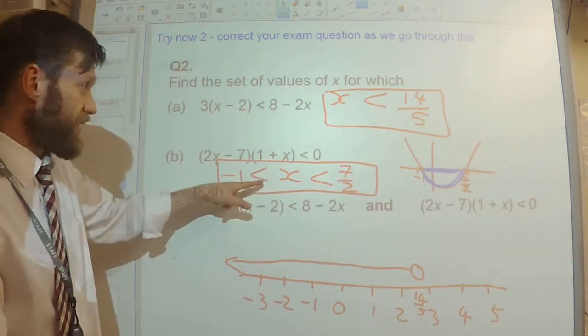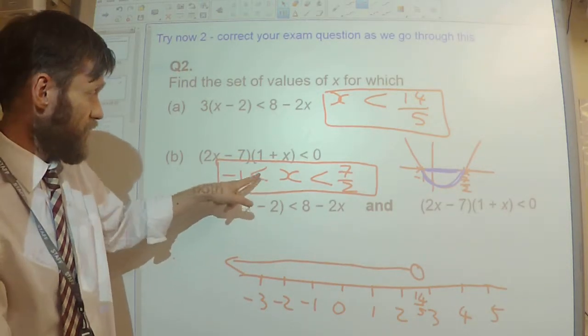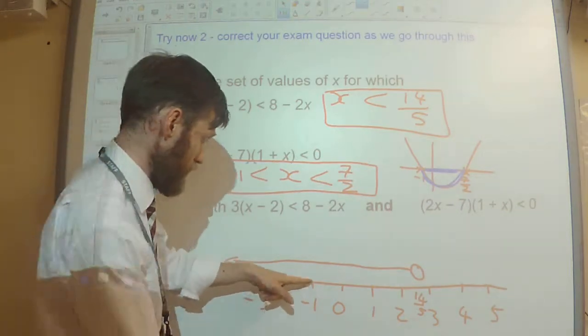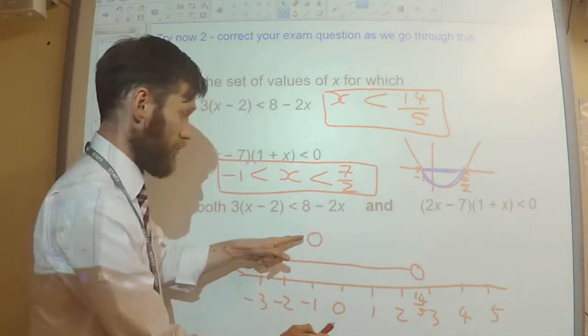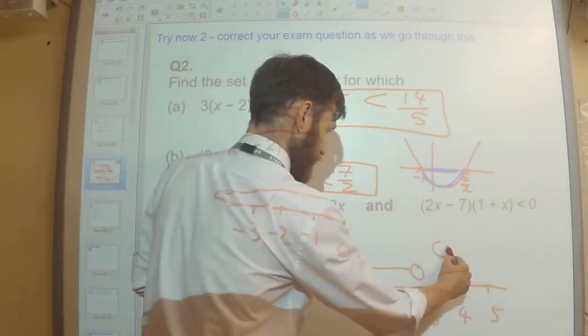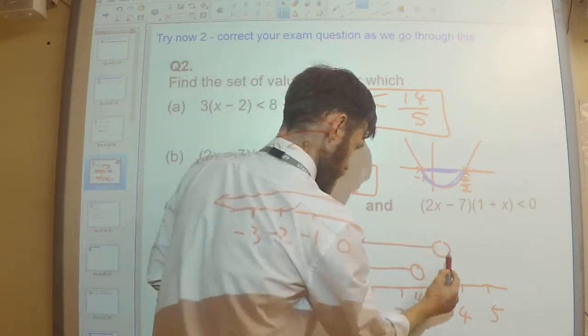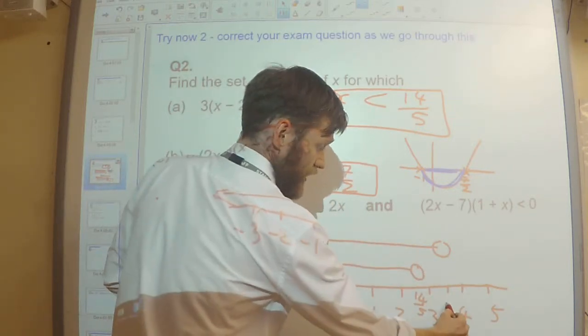Now, to draw this inequality on there. Now I know x is going to be greater than minus 1, so it's going to be above here, but below 3.5. That being 3.5 there.